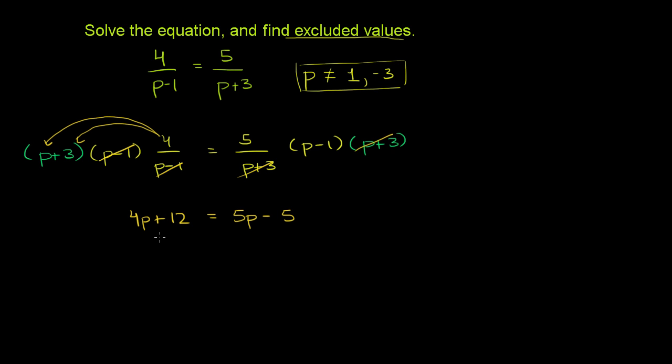And now this is a pretty straightforward linear equation to solve. We just want to isolate the p's on one side and the constants on the other. So let's subtract 5p from both sides.